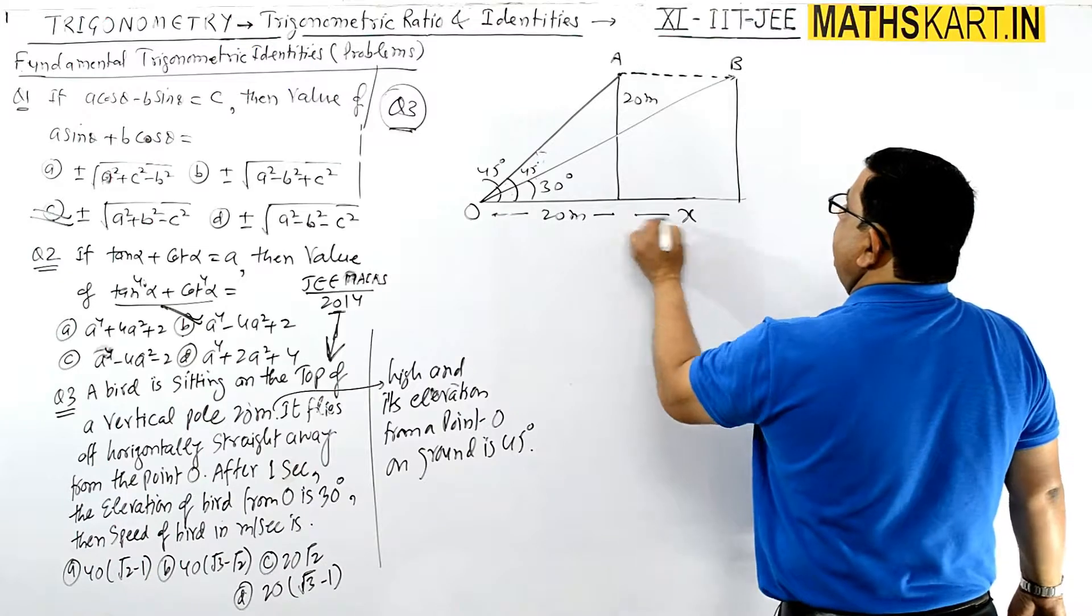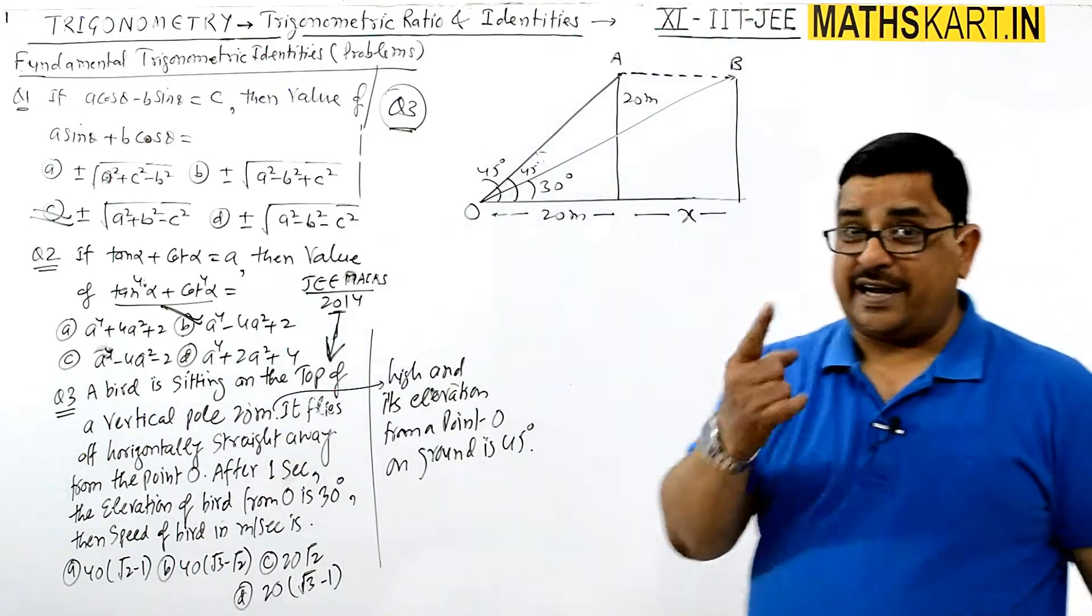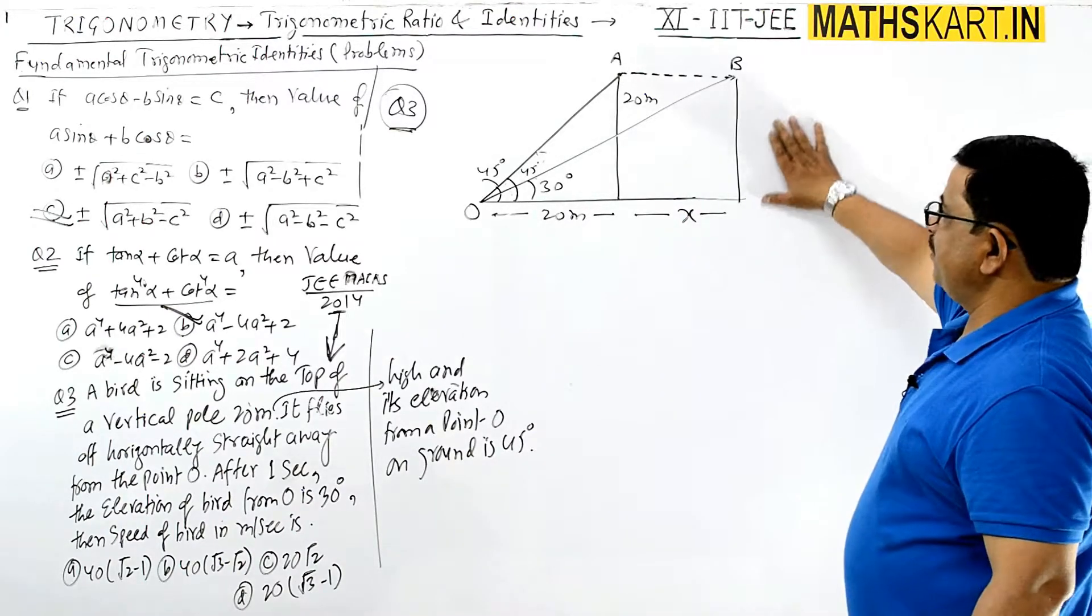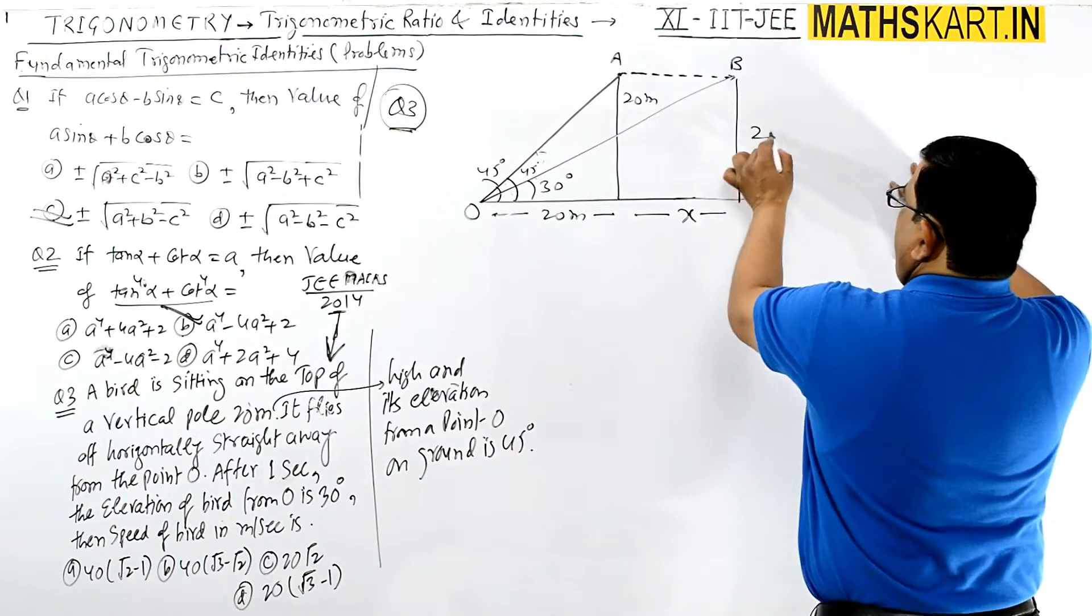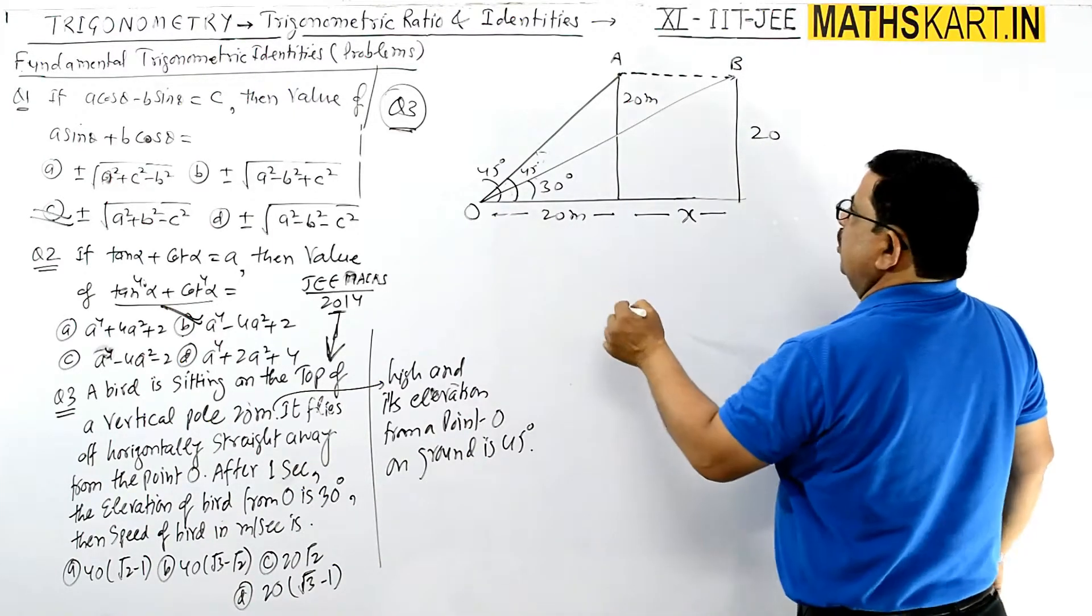So let's say it has traveled x distance, and this is 1 second. 1 second mein travel kia hai, aur speed meter per second mein nikalni hai. So ye toh 20 meter pata hai, aur ye wali length bhi x plus 20 ho gaya. So this is an easy question.